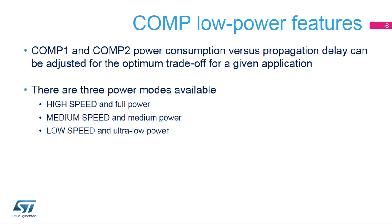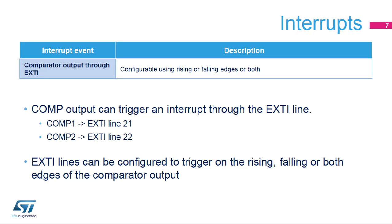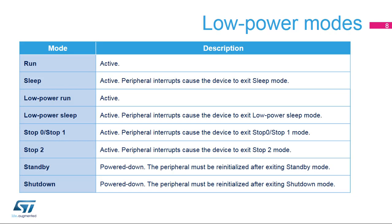The comparator can stay active even if the rest of the system is suspended and the clock is switched off. The comparator can trigger an interrupt on the rising, falling, or both edges of the comparator output through the EXTI line. The on-chip comparator remains active and can be used to wake up the device from all low-power modes except standby and shutdown.